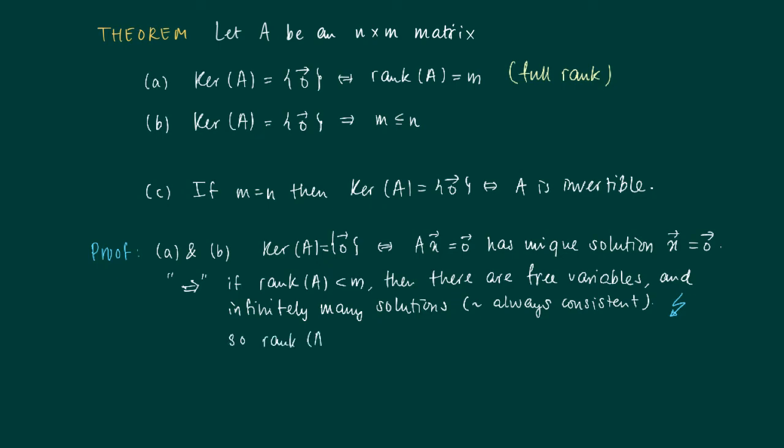So this contradicts uniqueness of the kernel, so the rank of A should be m. Now suppose the rank of A is equal to m. Then of course we have no free variables, and therefore the system has a unique solution. So this is basically the proof of A.